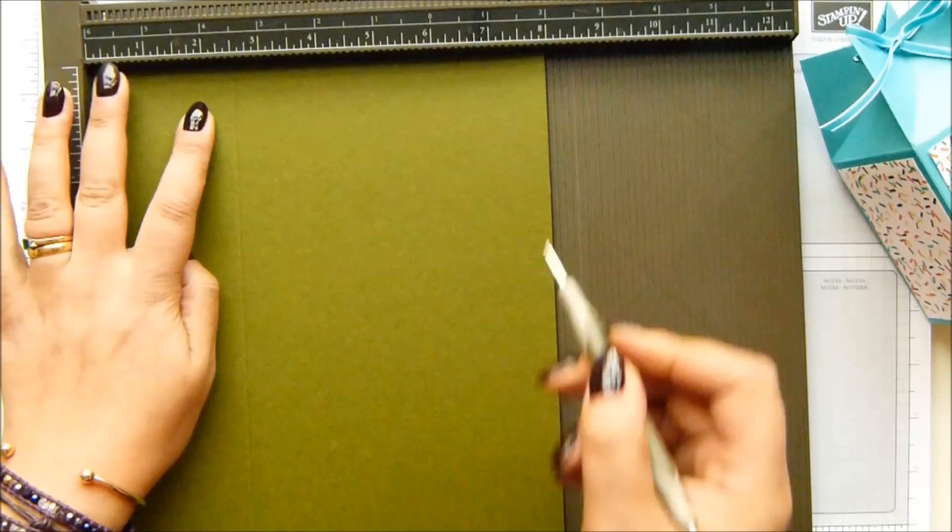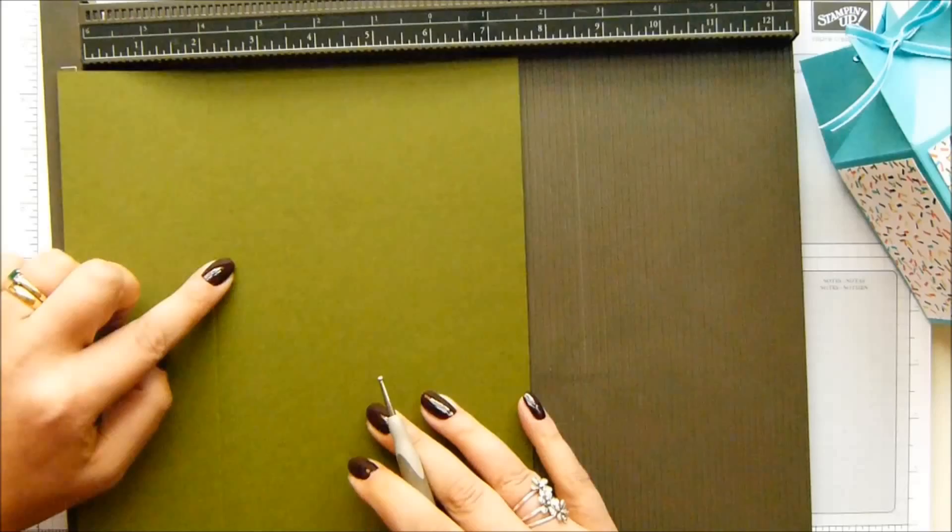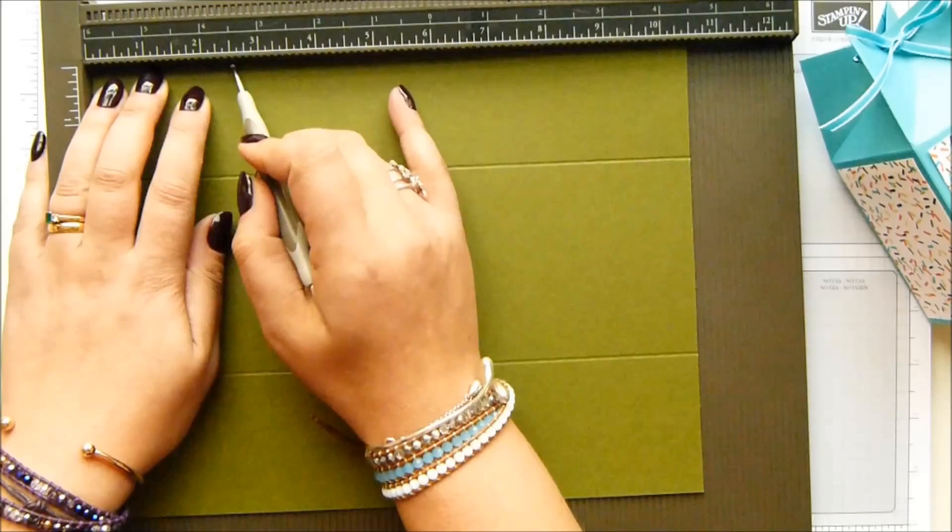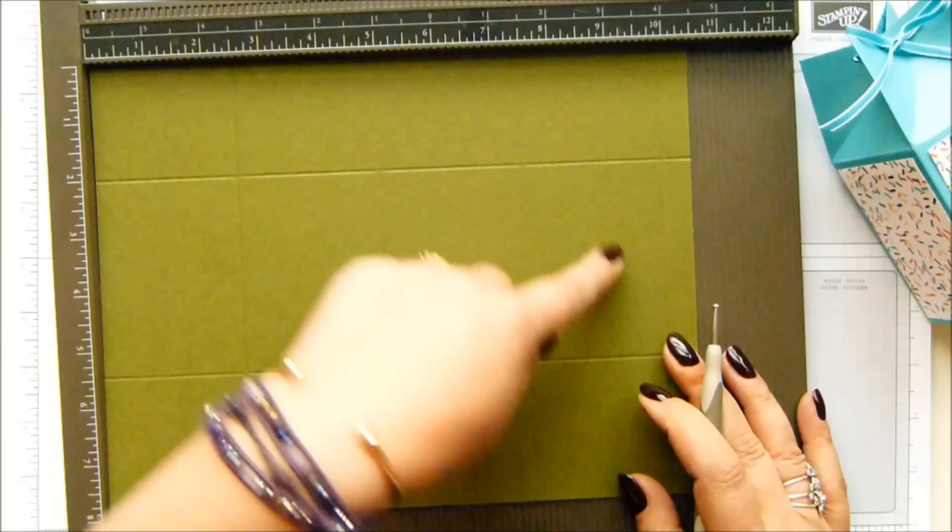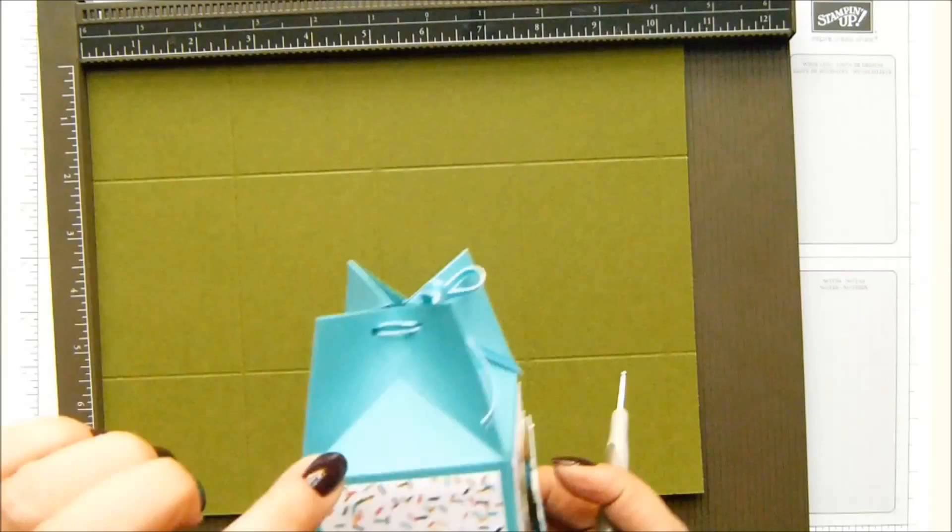You need a piece of cardstock that is 10 and a half inches by 8 inches, which is 27 and a half by 20 centimeters. We're going to score the short side first at 2 and a half and 6 inches. That is 6 and a half and 15 centimeters. Turn it around and score it on the long side at 2 and a half, 5, 7 and a half, and 10 inches, which is 6 and a half, 13, 19 and a half, and 20 centimeters.